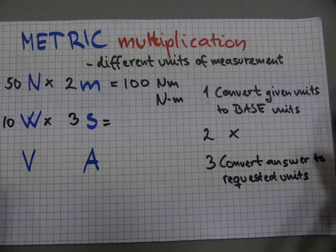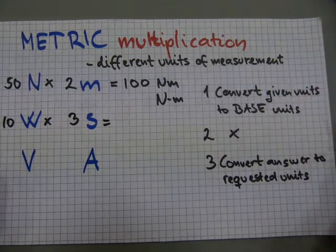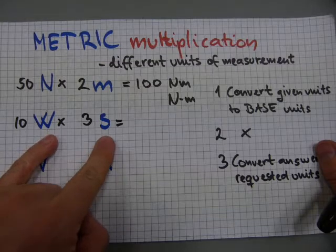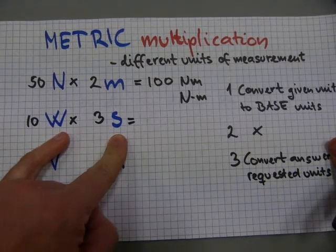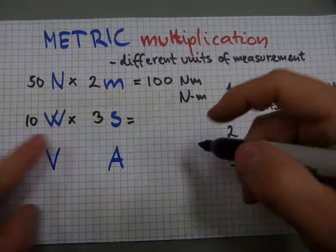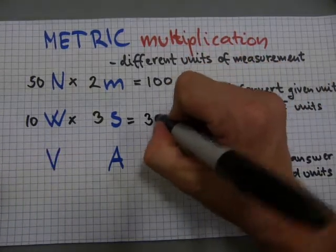The same thing, the same procedure works. You have to make sure these are base units, and these are base units, no metric prefixes, nothing is milli or centi here. Next one, do the numbers, 10 times 3, 30.